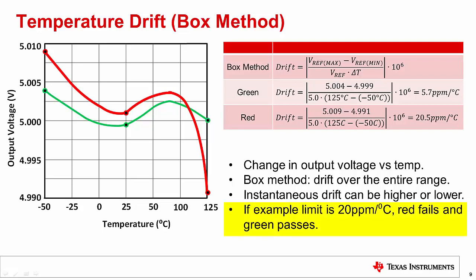In this example, the limit is set to 20 parts per million per degree Celsius, so the green curve passes while the red curve fails the limits. Temperature drift is considered a very important specification because it is usually not practical to calibrate this error. Typically, to achieve the best temperature drift, you simply choose a product with the best drift specification.